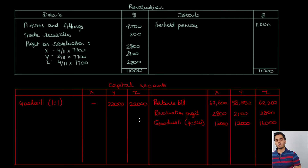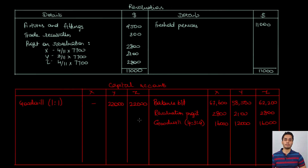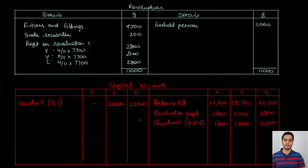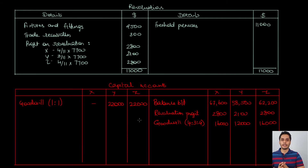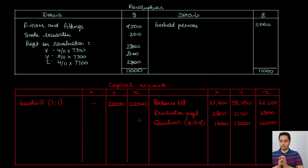Once the capital account entries are done, we pay 15,000 to X from the business bank account, recorded on the debit side of X's column. Any balance remaining in X's account is transferred to X's loan account, to be repaid in future — found by calculating the difference between the credit and debit sides. Finally, the capital accounts of Y and Z are balanced to find their closing balances, which will be used in the balance sheet.